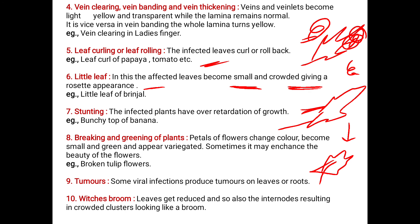Next comes witch's broom. The leaves get reduced and also the internodes, resulting in crowded clusters looking like a broom. The leaves and internodes become crowded clusters — this is the condition of witch's broom.